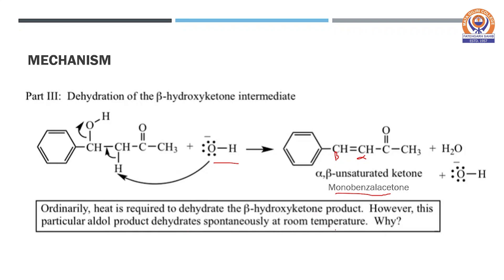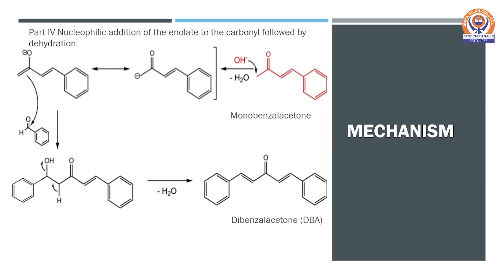This spontaneous dehydration occurs because it leads to a product that is extensively conjugated. In the fourth and final part of the mechanism, nucleophilic addition of the enolate to the carbonyl is followed by dehydration. The monobenzyl acetone formed in step 3 is acted upon by base and loses water, generating a resonance stabilized enolate which attacks onto the second mole of benzaldehyde, forming a new carbon-carbon bond, which again undergoes very spontaneous dehydration leading to the formation of dibenzyl acetone. This product is extensively conjugated, which is why the dehydration takes place very spontaneously.